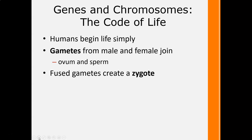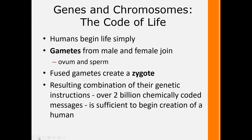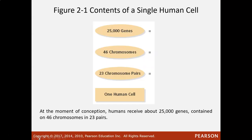For twins, we call them monozygotic or dizygotic. This word zygote, the first cell created, has been played on quite often in this field. With one sperm and one egg coming together, you have a combination of over 2 billion chemically coded messages — enough to create an entire human. One cell carries 23 pairs of chromosomes: you get 23 from the egg and 23 from the sperm, so each cell carries 46 chromosomes, which has 25,000 genes in it.